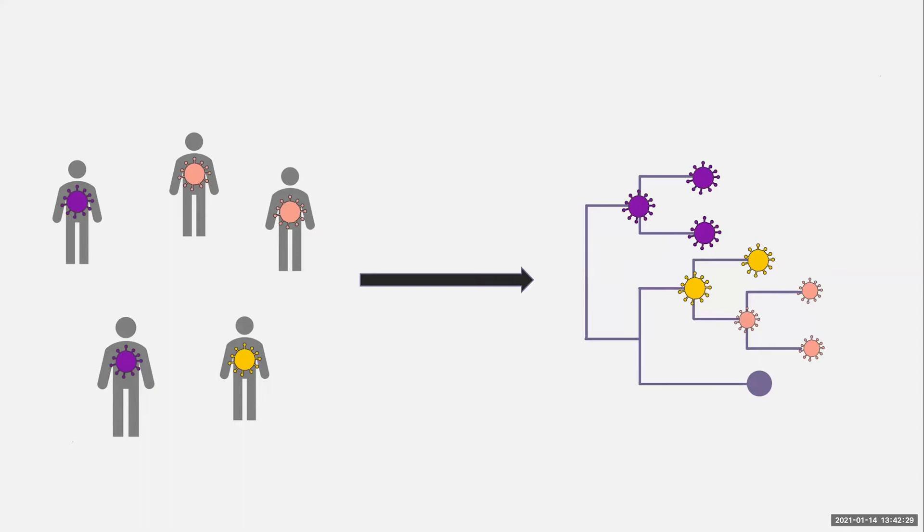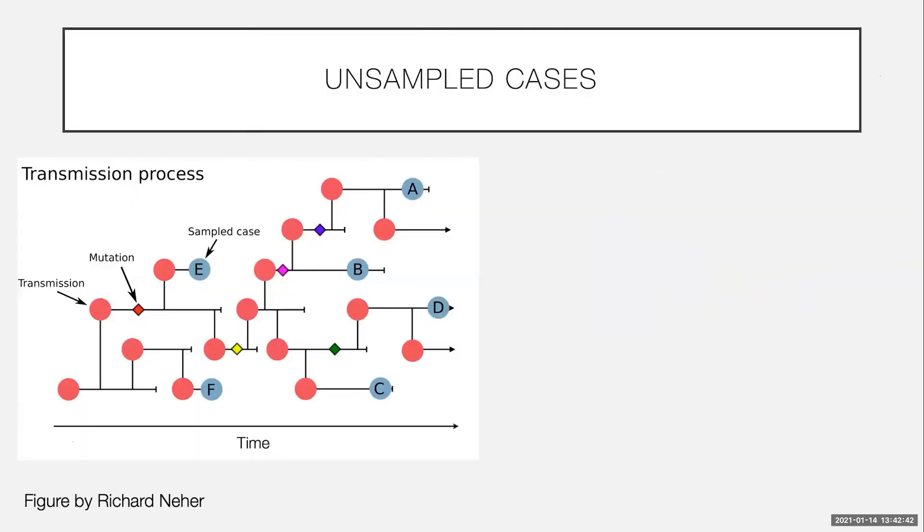And theoretically, if you sample absolutely every single case, then the transmission tree and the phylogeny would end up having the same shape. And we could say that the yellow and pink viruses are close in the transmission chain. However, in practice, we hardly ever have every case sampled. That's a very unusual thing to happen.